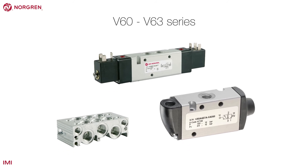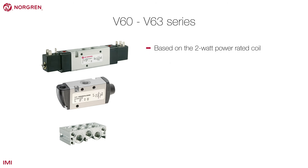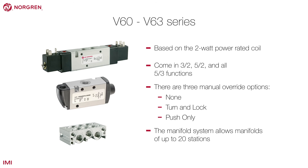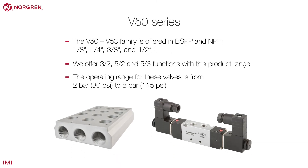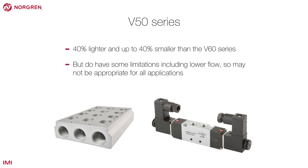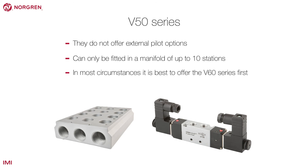The V60 to V63 valves are Norgren's complete family of core inline pilot operated and solenoid pilot valves, based on the 2-watt power rated coil and available in 3-2, 5-2 and all 5-3 functions. There are three manual override options: none, turn and lock, and push only. The manifold system allows manifolds of up to 20 stations with options for using an external solenoid pilot. The V50 series is also a family of inline solenoid and pilot valves offering a low-cost alternative — they are 40% lighter and up to 40% smaller than the V60 series, but have some limitations including lower flow, no external pilot option and can only be fitted in a manifold of up to 10. In most circumstances it is better to offer the V60 series first.